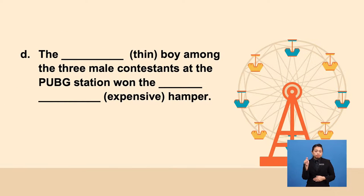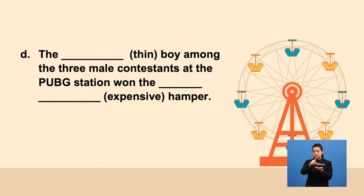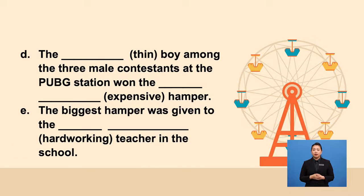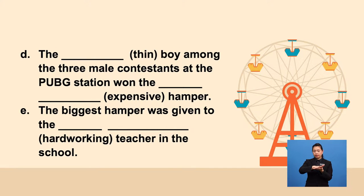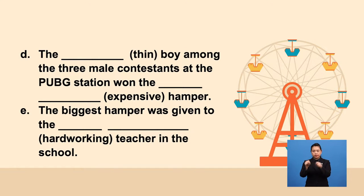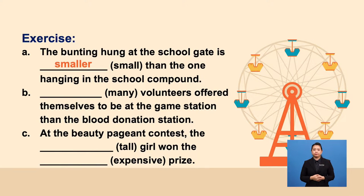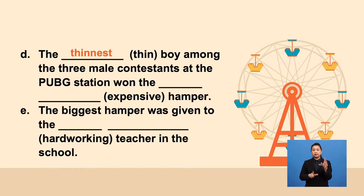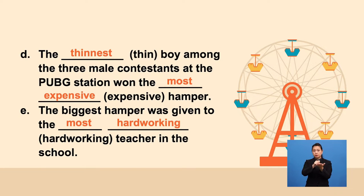Next: at the beauty pageant contest, the blank tallest girl won the most blank expensive prize. The blank taller boy among the two male contestants at the PUBG station won the blank most expensive hamper. The biggest hamper was given to the blank most hardworking teacher in the school. The answers are: A) smaller, B) more, C) tallest and most expensive, D) taller and most expensive, E) most hardworking.